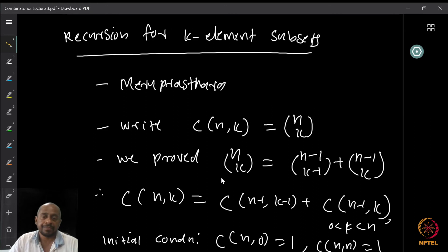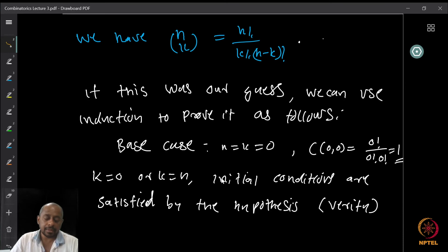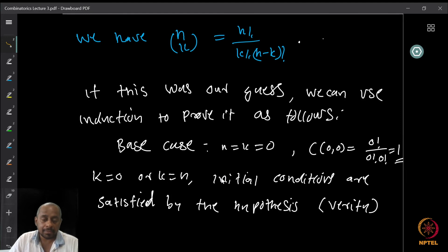Now suppose we did not know the formula for n choose k. We already proved that n choose k equals n factorial divided by k factorial times n-minus-k factorial, but suppose we didn't know this. Suppose we tried out several examples and came up with a guess that n choose k is something like n factorial over k factorial times n-minus-k factorial, but only a guess without a proof. We can use induction — if we have this guess, we can use induction to prove it from the recurrence relation.